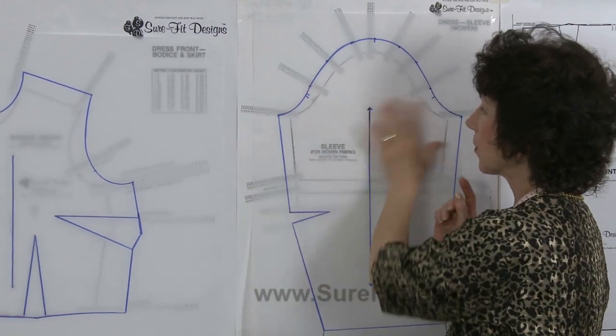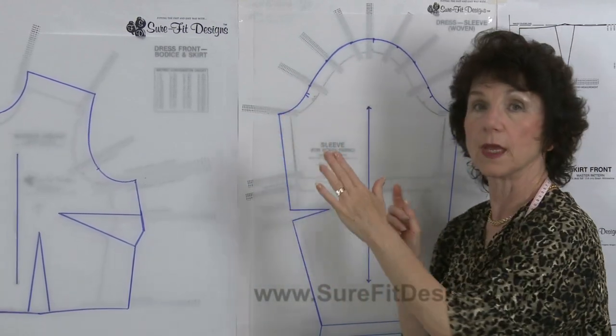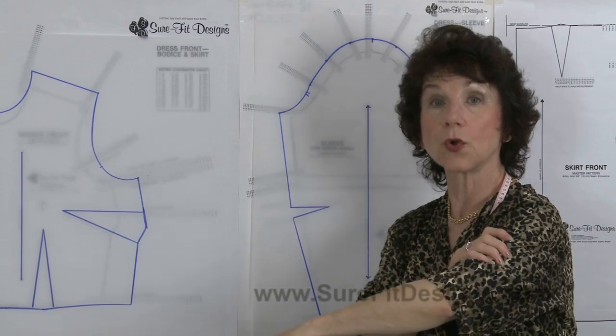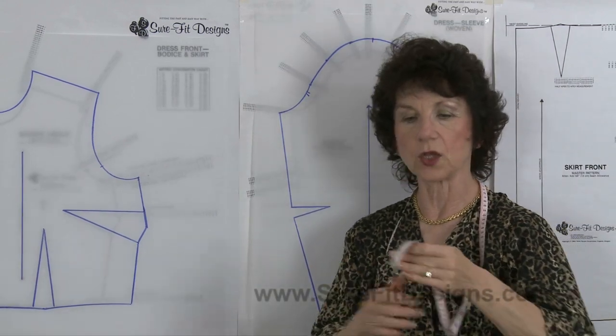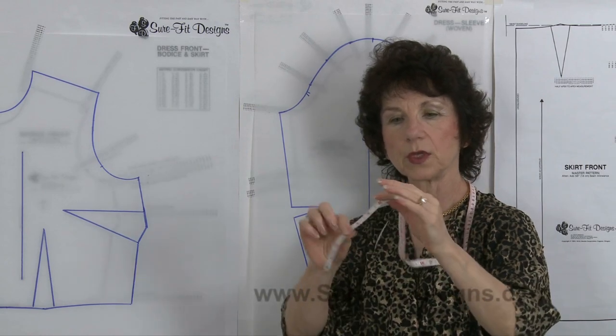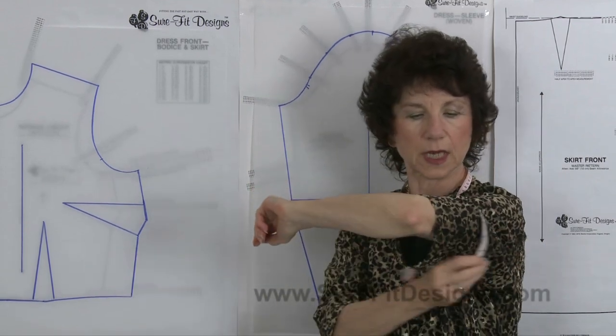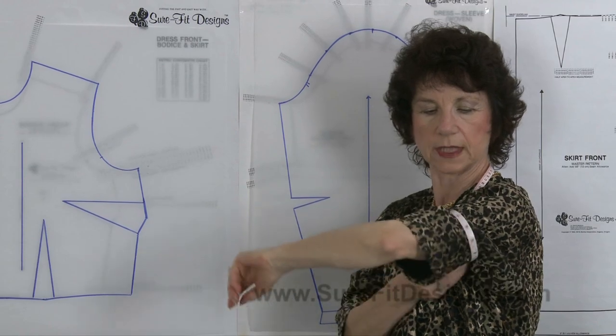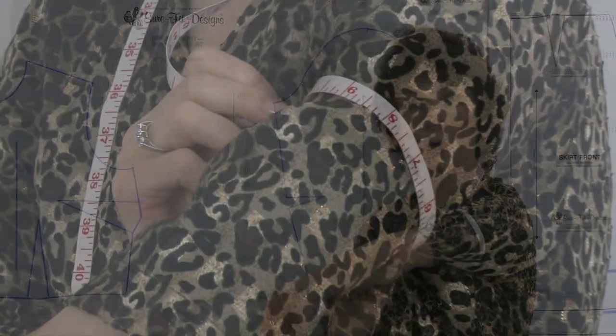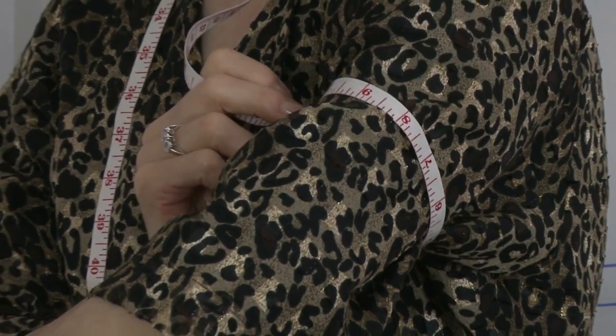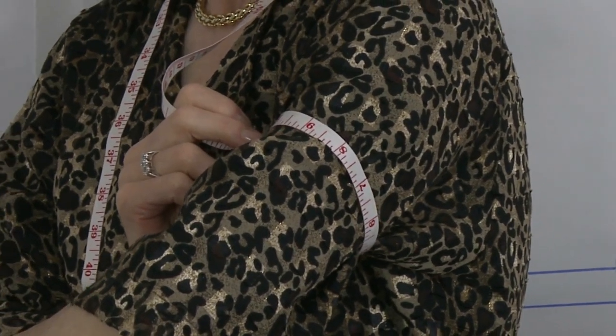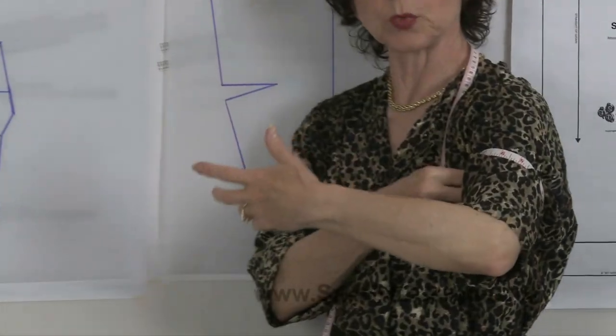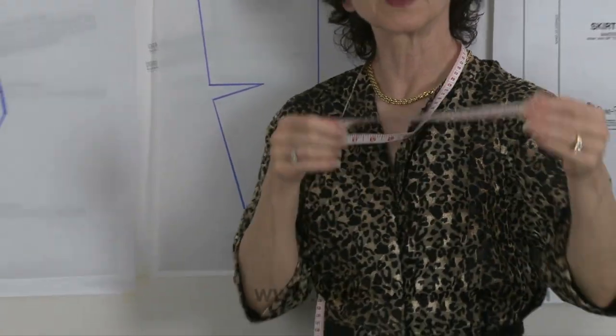The first thing that you'll want to do when you're taking your measurements is get your tape measure and measure yourself around in your bicep area, just pretty much underneath your armpit, and pick up and record whatever that measurement is. Then you're going to take that measurement and compare it to the pattern.